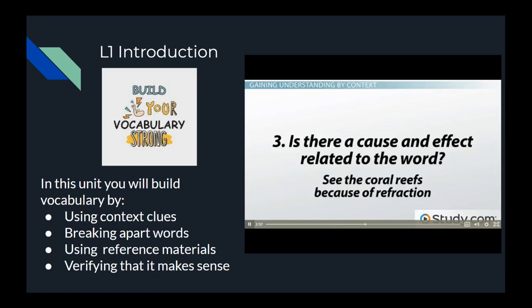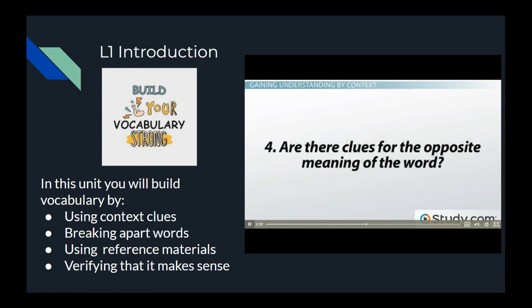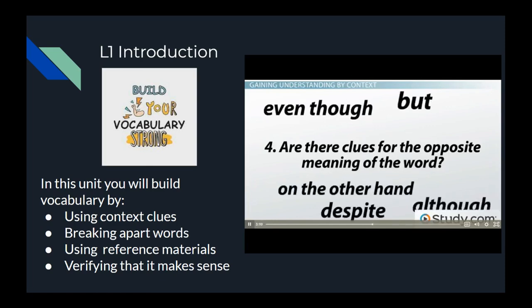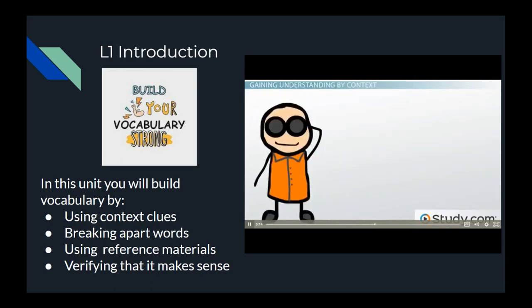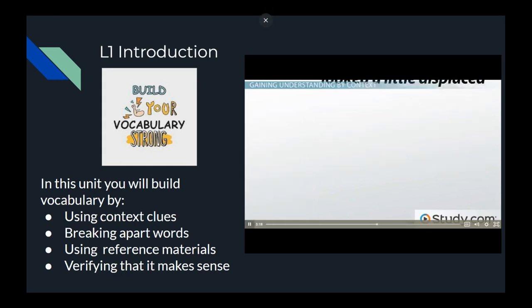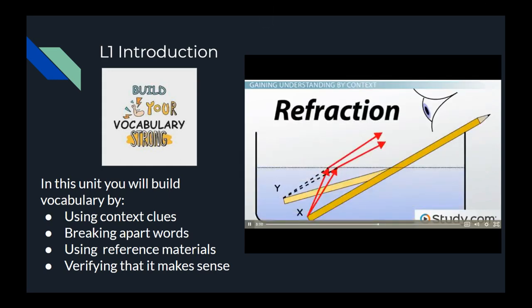Four, are there clues for the opposite meaning of the word? Words and phrases like 'even though,' 'but,' 'on the other hand,' 'despite,' and 'although' indicate an opposite or contrast. He could see because of refraction even though things looked a little displaced. Let's put our findings together. Refraction is about light but makes things a little displaced.